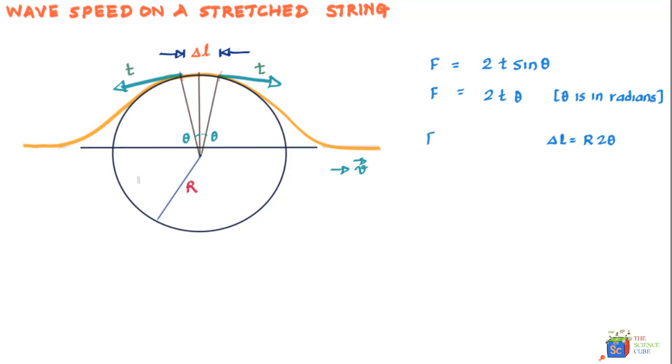In that case, F = T × Δl / R, because 2θ is nothing but Δl / R, and that's what we have substituted for 2θ.